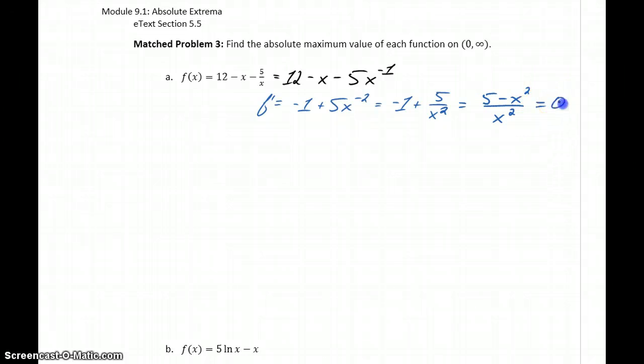Setting this equal to 0, we'll get a 0 in the numerator whenever 5 minus x squared equals 0. So that means x equals plus or minus the square root of 5. The derivative will be undefined whenever the denominator equals 0, so whenever x equals 0. We have our three critical values.